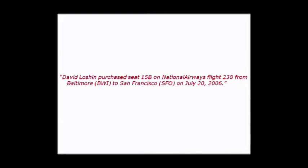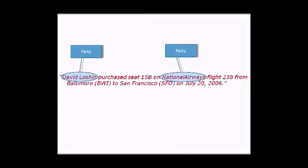Our first observation is made based on looking for any proper nouns in the statement. There are two: David Loshan and National Airways. These are reference names associated with parties. In turn, we have to think about the role that each party plays within the business context. David Loshan is the party driving the transaction and is acting in the role of customer. National Airways is the party that holds the seat inventory and is doing the selling.